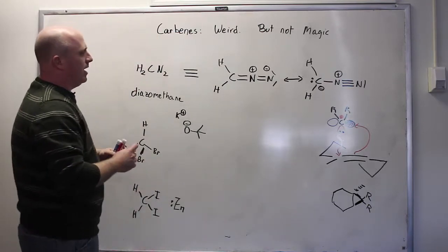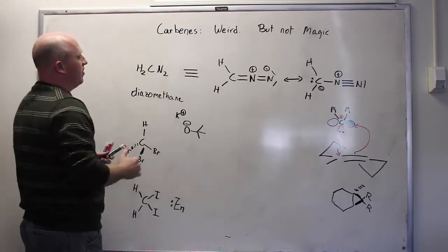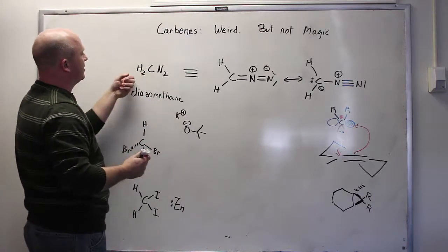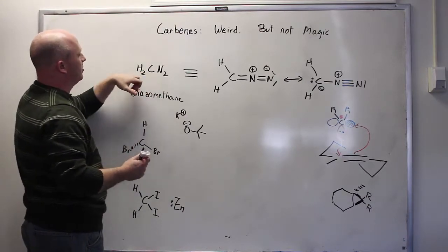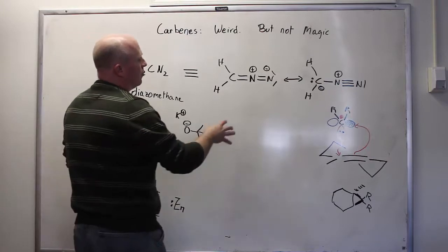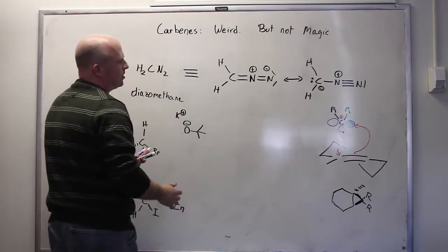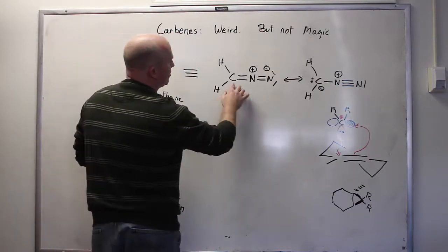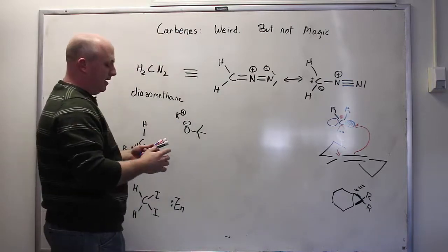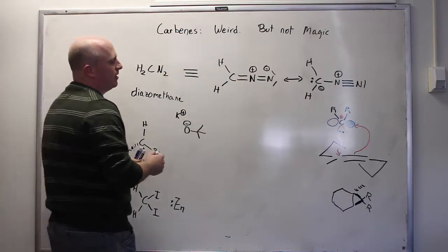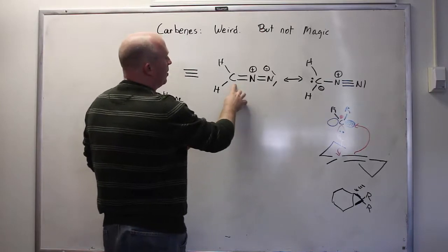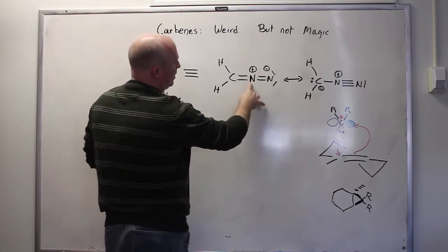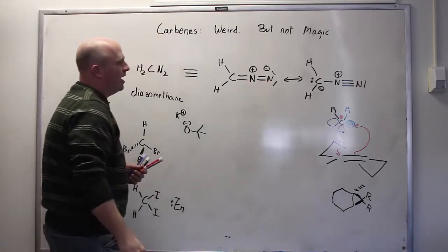So how do we make carbenes? Well, there's lots of different ways. Diazomethane is one of them, and what you have is this weird looking structure with a carbon, two hydrogens, and two nitrogens. If you draw out the Lewis structure for it, the Lewis structure that makes the most sense is one where the carbon doesn't lack for an octet and doesn't have any extra electrons on it. It's simply happy. But if you draw that Lewis structure, that puts a plus on this nitrogen and a minus on that nitrogen.